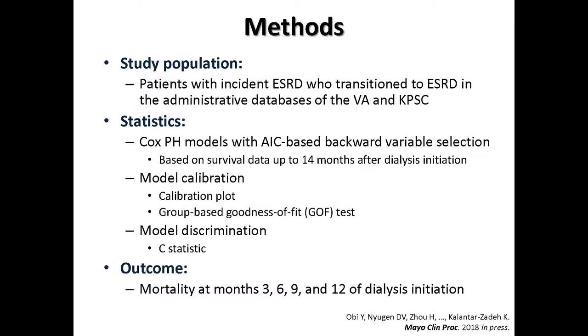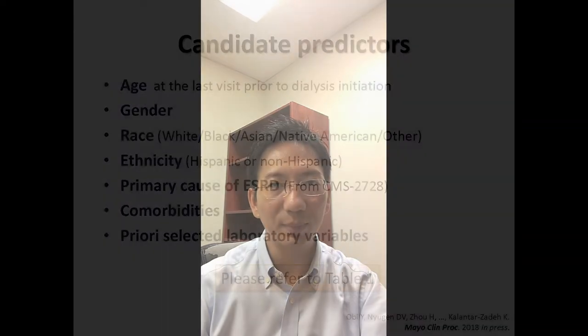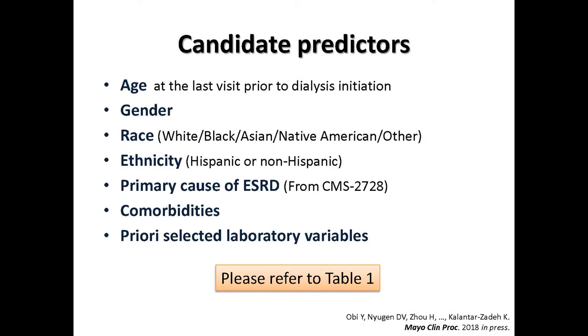Using Cox proportional hazards models, prediction models for mortality during the first year of dialysis were developed based on survival data up to 14 months after transition to dialysis. Follow-up started at dialysis initiation and continued until death or the date of final follow-up assessment, which was September 2, 2014. As candidate variables, we used a priority-selected set of variables less likely to be intentionally modified, as listed in Table 1. We did not use easily modifiable variables such as medication data or laboratory variables including hemoglobin, serum phosphorus, and bicarbonate.